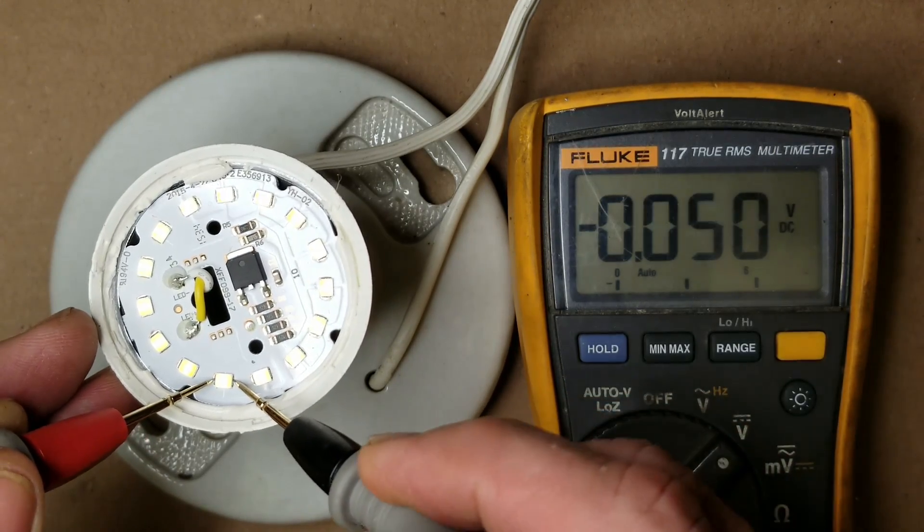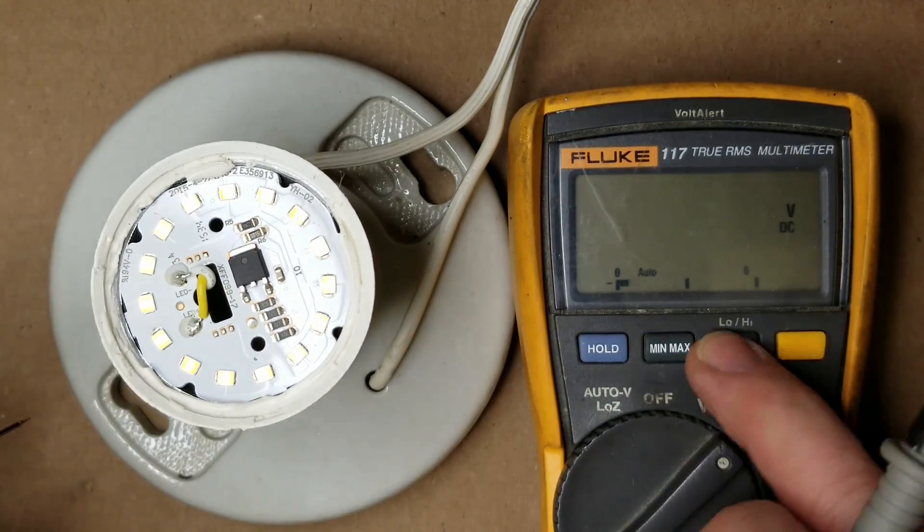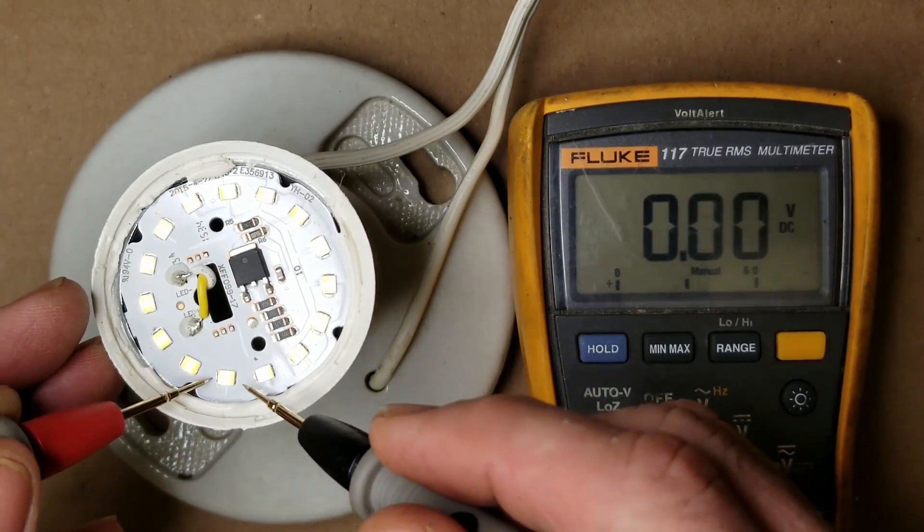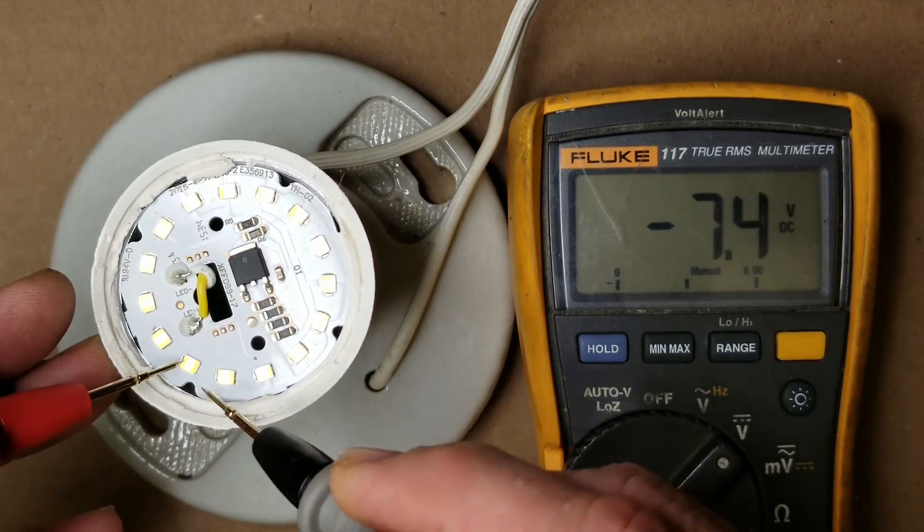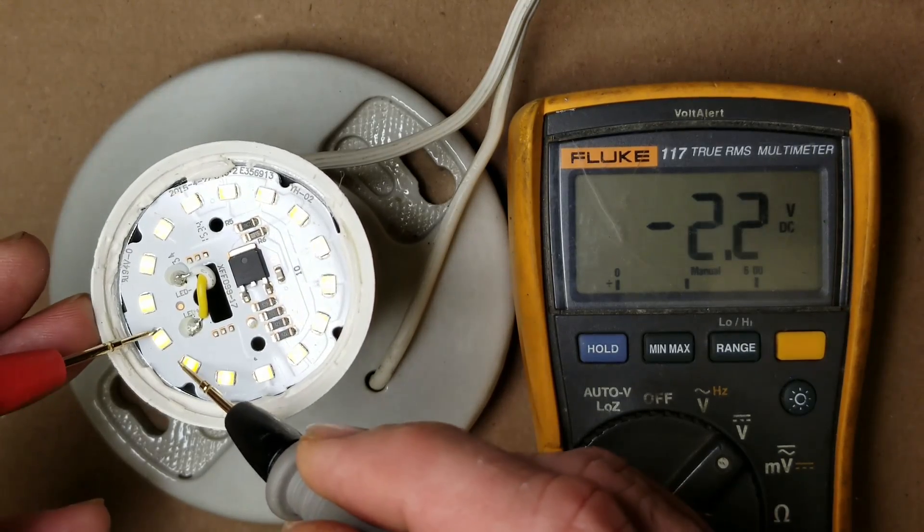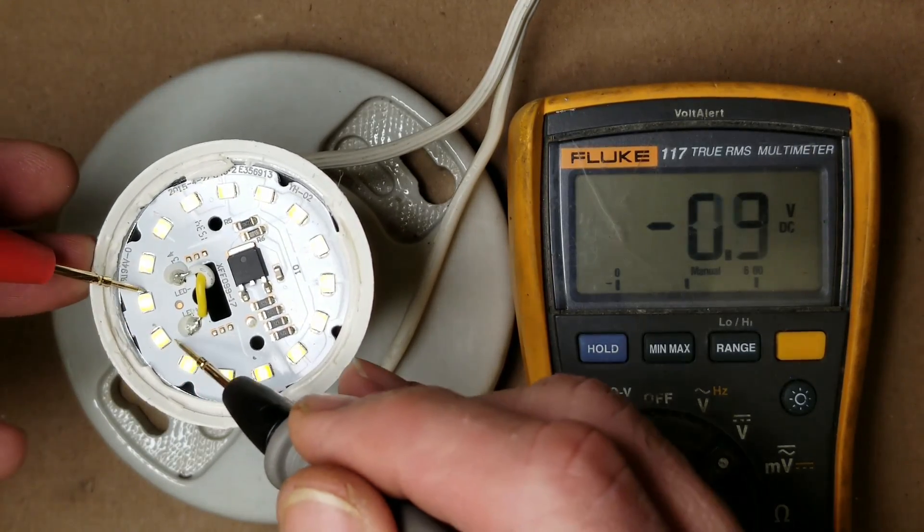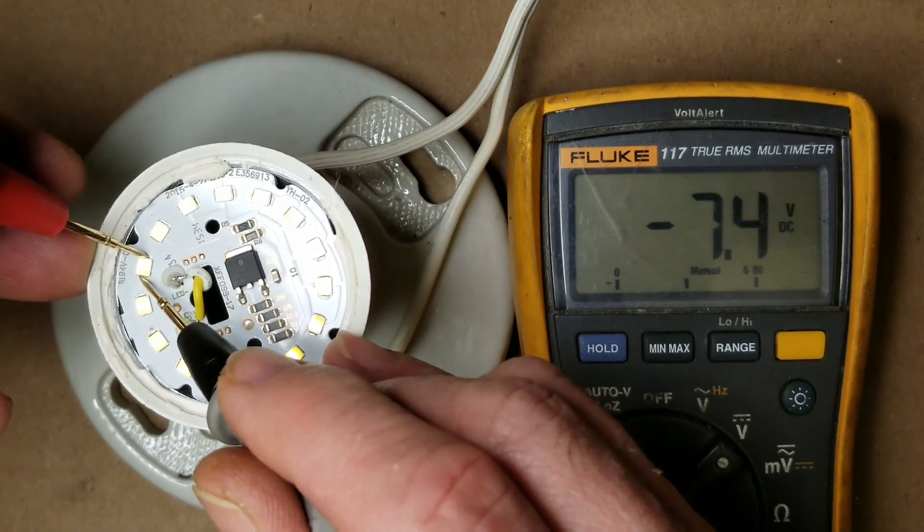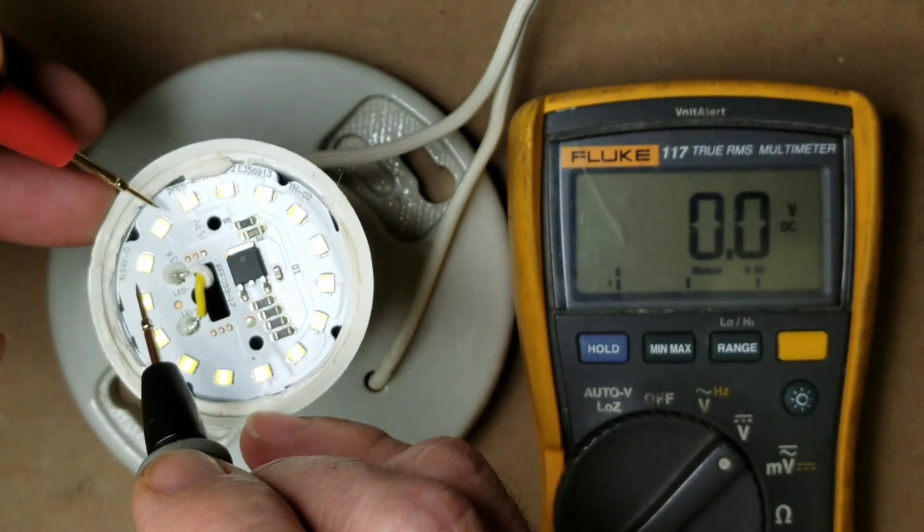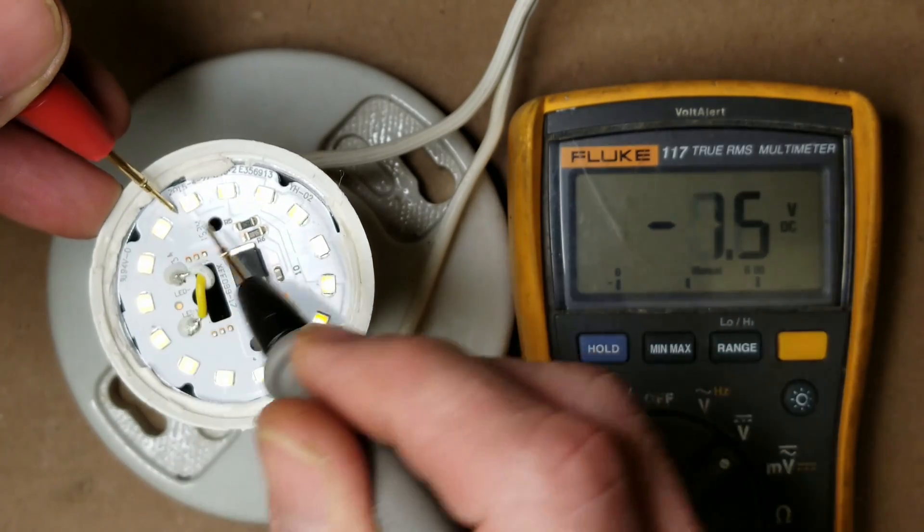7.4 volts. We'll just go around the dial and put this in non-auto ranging. I'll put it in 600. One of these is going to be dropping more voltage than the other ones. That's going to be the problem.